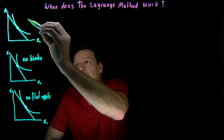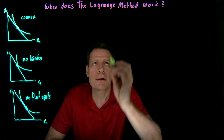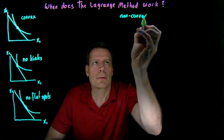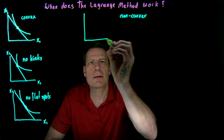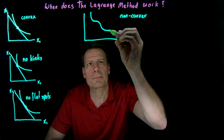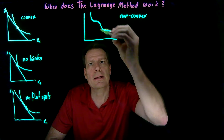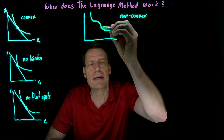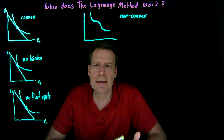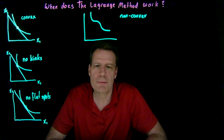Then it might be that instead of the convex tastes we've been working with, the tastes are non-convex. Non-convex tastes would give rise to indifference curves that might have bumps like this. This would be non-convex because we can pick two points on that indifference curve, and the line that connects them — containing the weighted averages between those bundles — lies below the indifference curve. So the weighted averages would be less preferred than the more extreme bundles, and that's a violation of convexity.